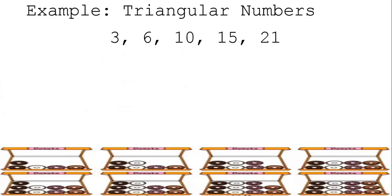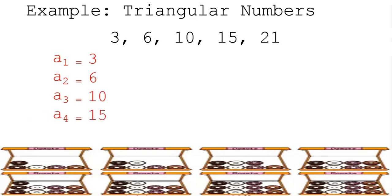Let's have an example using the triangular numbers, wherein the terms are 3, 6, 10, 15, and 21. a sub 1, the first term, is 3. a sub 2 is 6. a sub 3 is 10. a sub 4 is 15. And a sub 5 is 21.